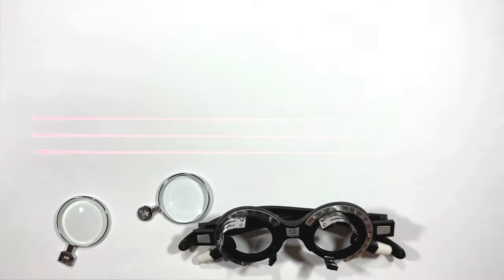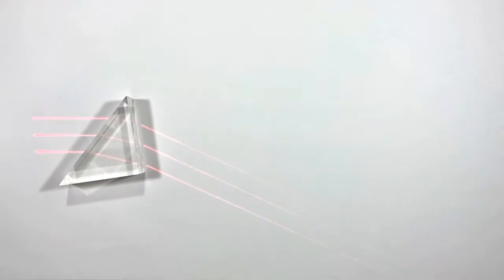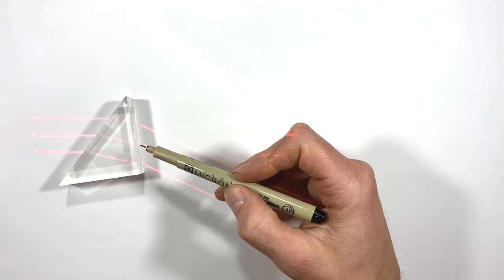So to understand refraction let's take a look at a prism. When light strikes a transparent medium, say glass, some of that light passes into the glass.